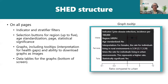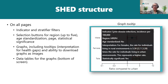In terms of the structure of SHED, on all pages you'll find at left: indicator and stratifier filters, selection buttons for regions — we have up to five, generally Ontario, the Southeastern region as an aggregate of all three health units, and then individual health units. You can also age-standardize or not, select pages, highlight statistical significance or not, view graphs with the ability to download them as images, use tooltips that give the characteristics of the estimate and a line for interpretation, and access data tables at the bottom of each page.